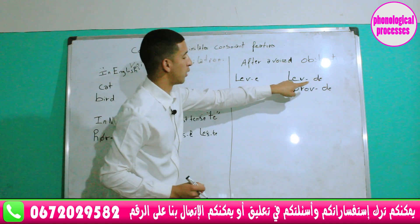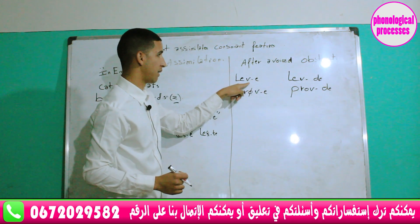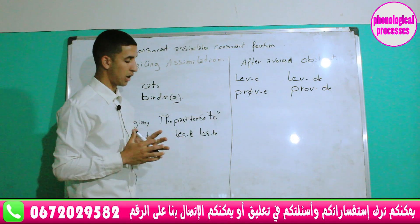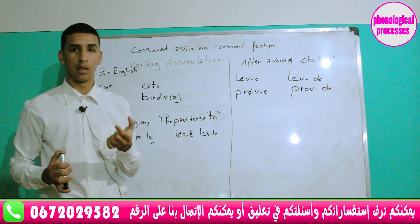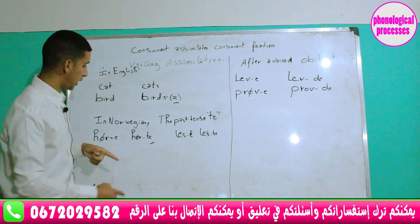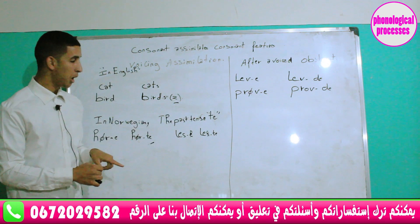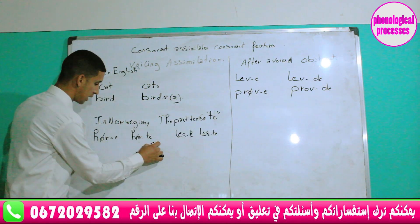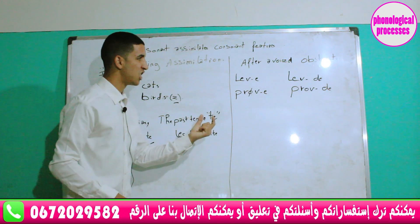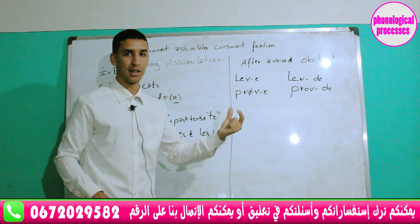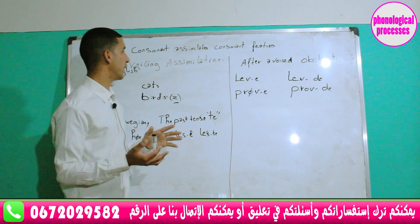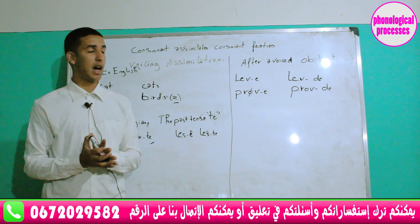This change occurs because the last consonant is a voiced obstruent. Whenever you have a voiced obstruent at the end of a word in Norwegian, the past tense suffix -T changes to -D. The difference between the two groups is that in the first group we don't have assimilation because the past tense suffix -T stays the same, but in the second group we have assimilation because -T changes to -D, from a voiceless alveolar stop to a voiced alveolar stop.